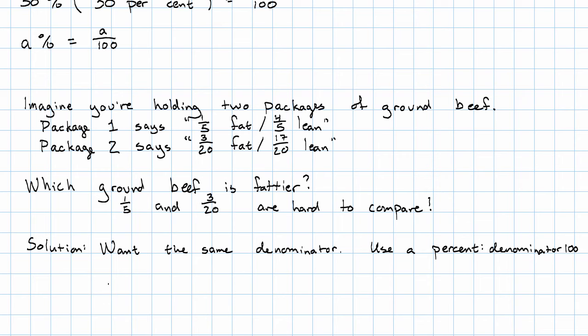So we say one-fifth, multiply the numerator and denominator both by twenty. And we'll have twenty hundredths, so twenty percent.